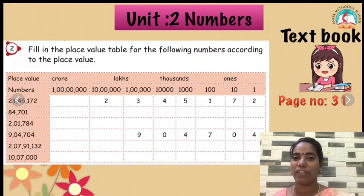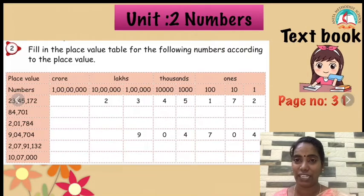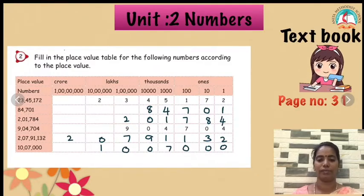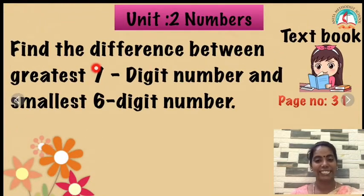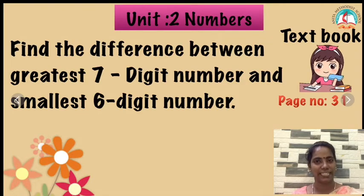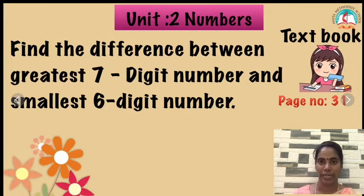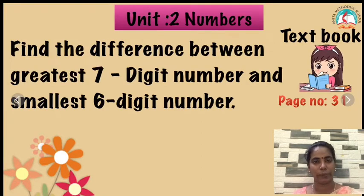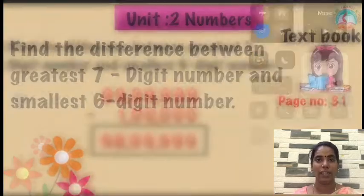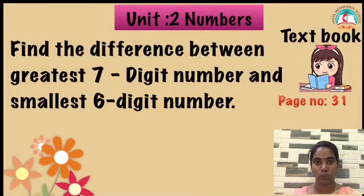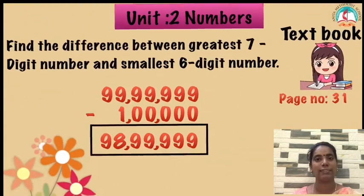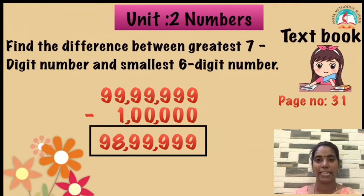The next one: we are going to see the difference between the greatest number and the smallest number. The greatest 7-digit number is 99,99,999. The 6-digit smallest number is 1 lakh. So when you subtract 99,99,999 minus 1,00,000, what will you get? 99 minus 1 is 98, so the answer is 98,99,999.